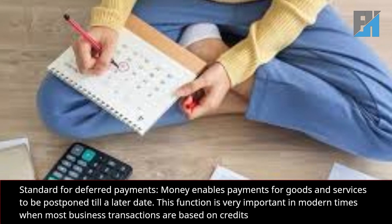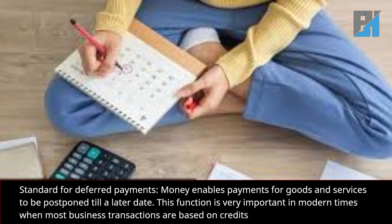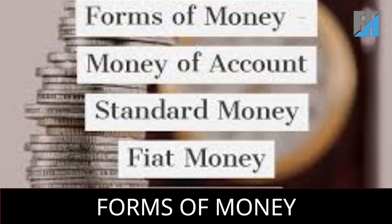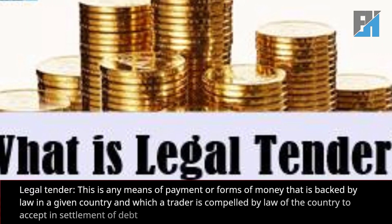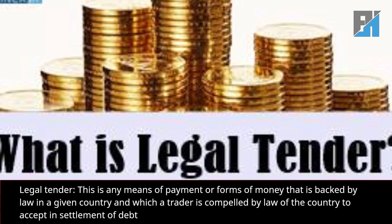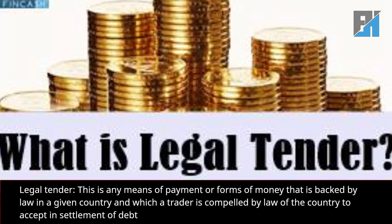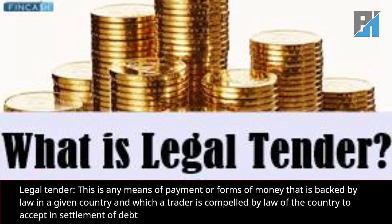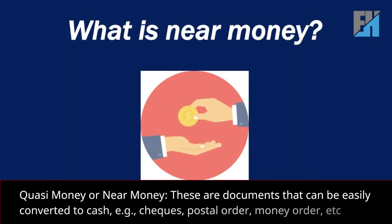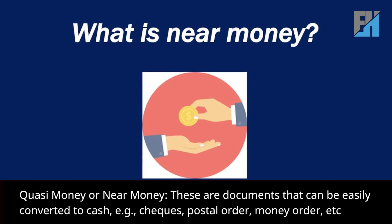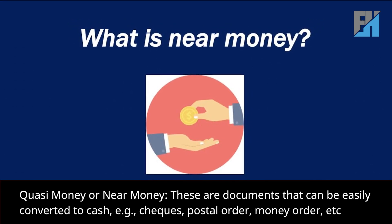Standard for deferred payments: money enables payments for goods and services to be postponed till a later date. This function is very important in modern times when most business transactions are based on credits. Forms of money — legal tender: this is any means of payment or form of money that is backed by law in a given country, and which a trader is compelled by law to accept in settlement of debt. Quasi money or near money: these are documents that can be easily converted to cash, e.g., checks, postal orders, money orders, etc.